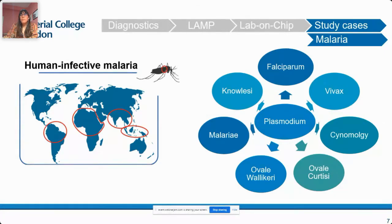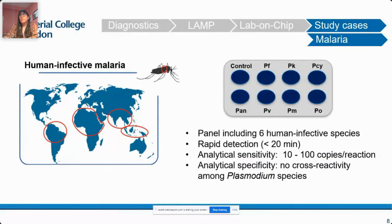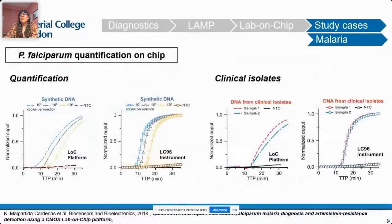We have been working on the development of a panel of assays to detect all human-infective Plasmodium species with a turnaround time of less than 20 minutes and high sensitivity and specificity. As an example, we first developed a Plasmodium falciparum assay and demonstrated its translation to the lab-on-chip device, showing the suitability of this platform compared to conventional fluorescence-based real-time instruments. We demonstrated that quantification is possible — a huge milestone — as well as detection of clinical isolates from extracted parasite DNA.